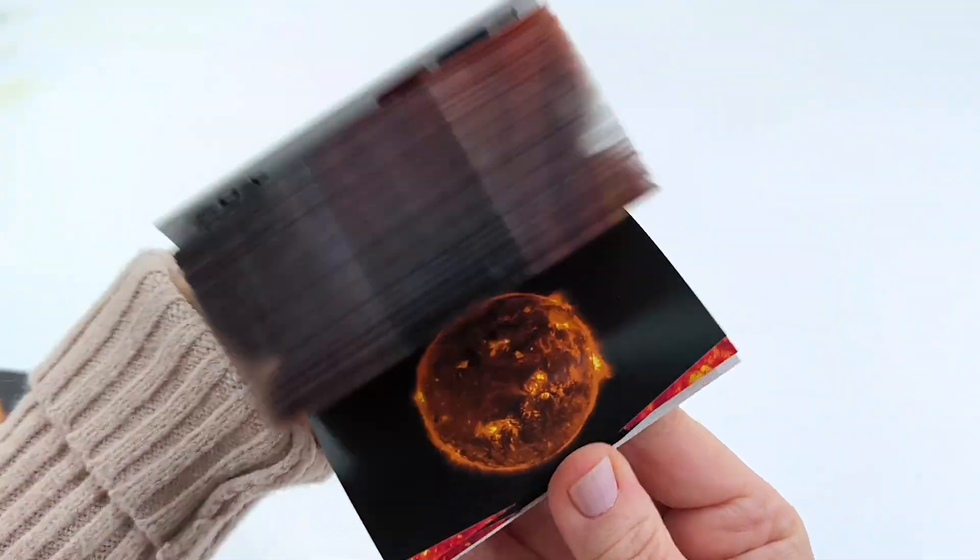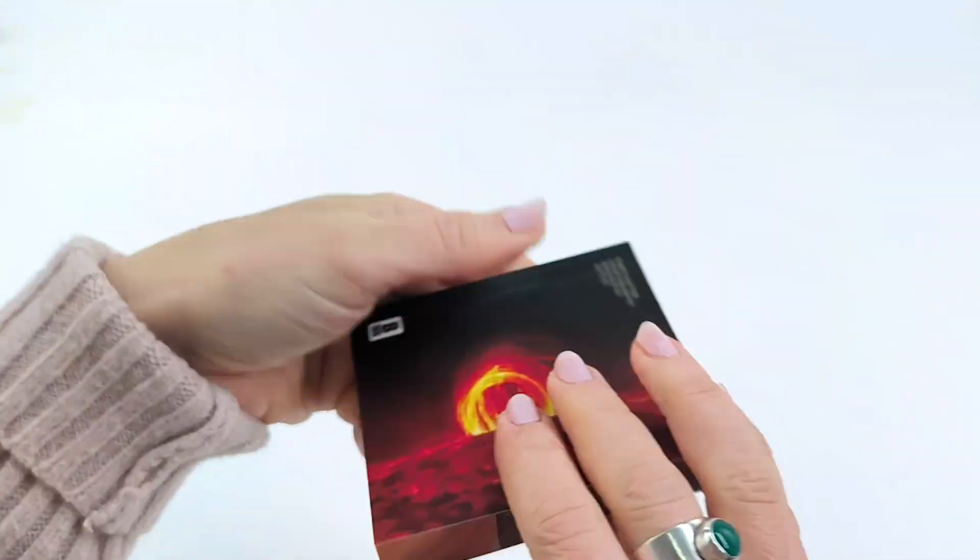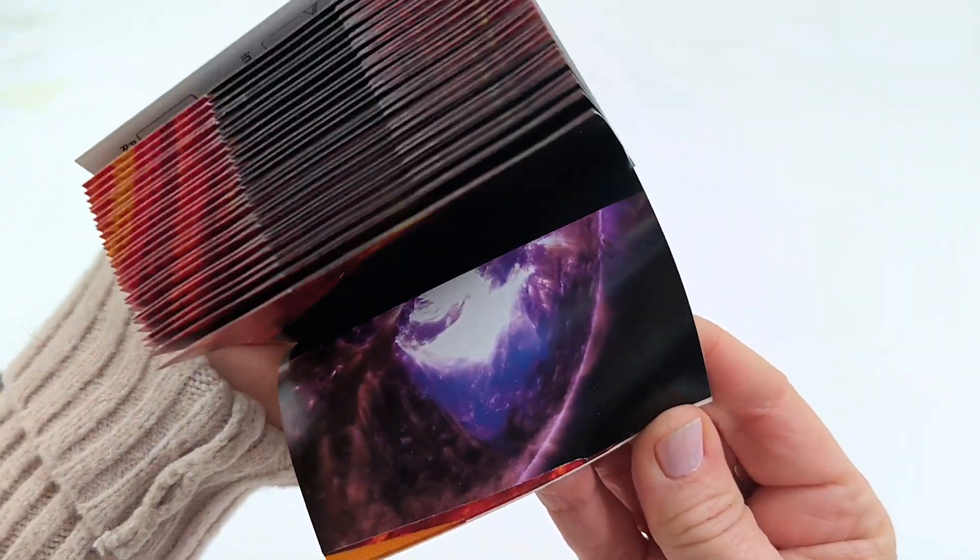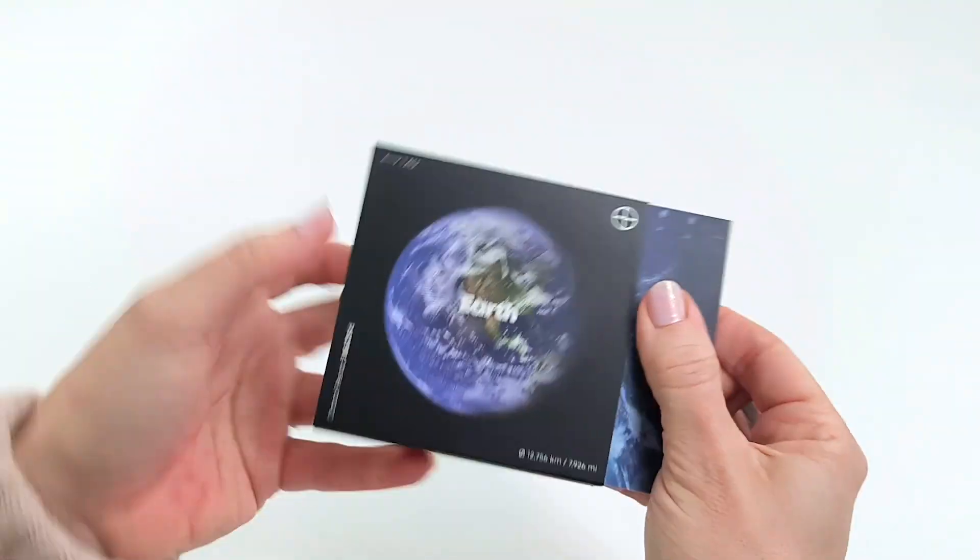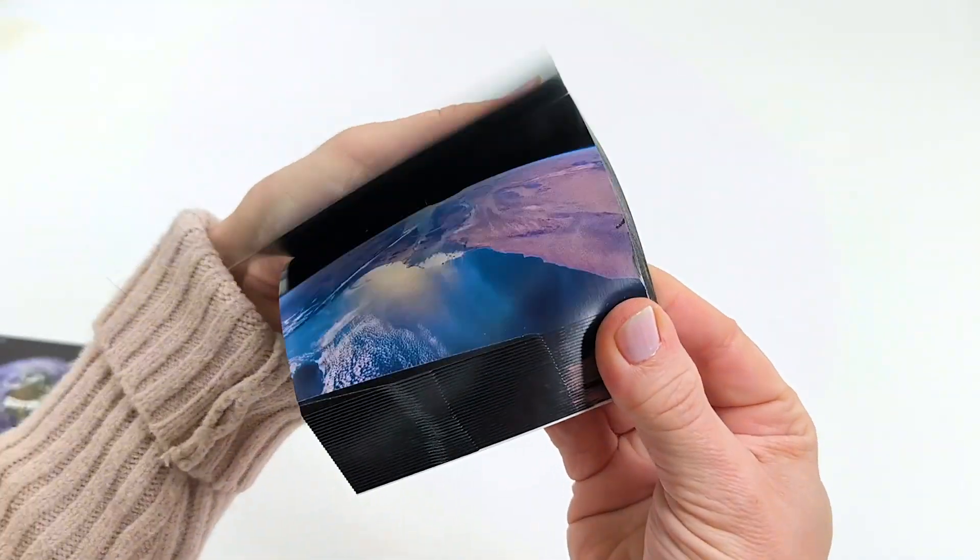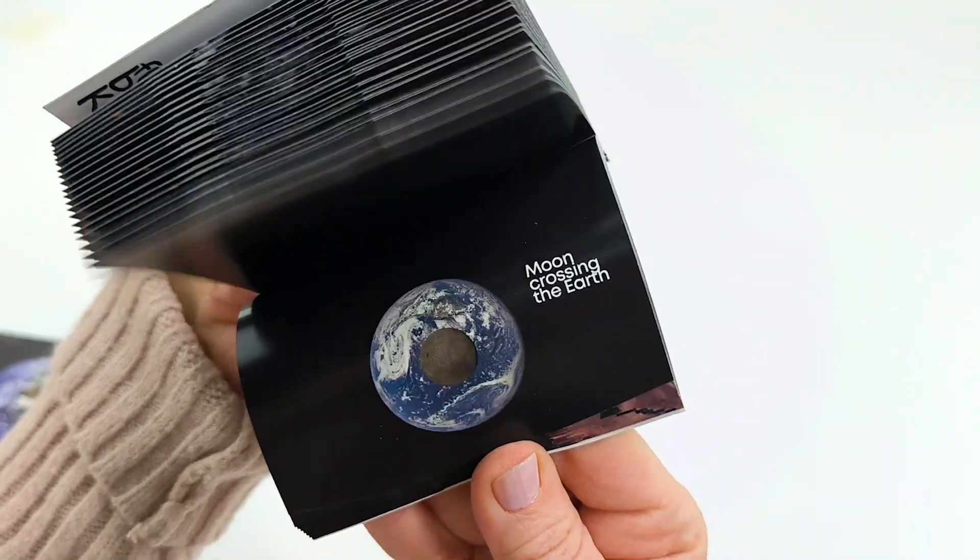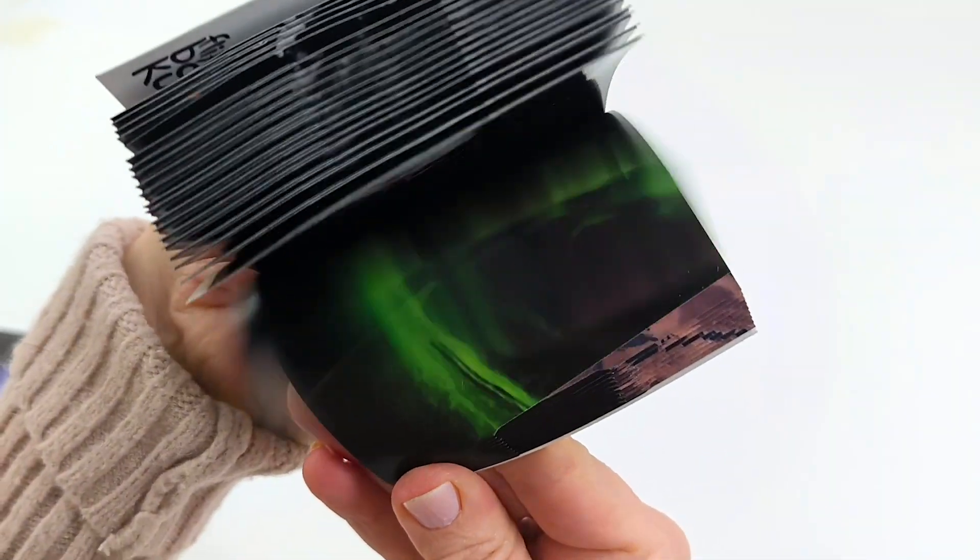We call them Cinemagic because they come with a clever twist. Each flipbook contains six different space shots that are revealed by changing the position of your thumb. This means you can discover no fewer than 60 thumb-powered image sequences over the entire collection.